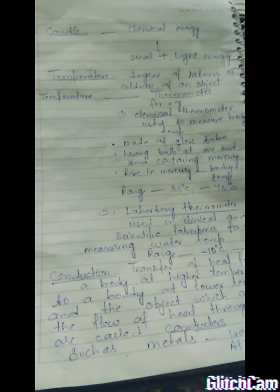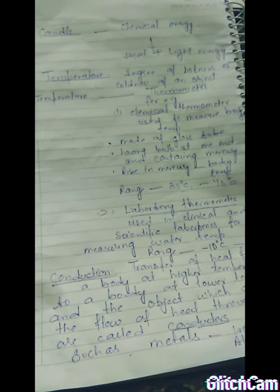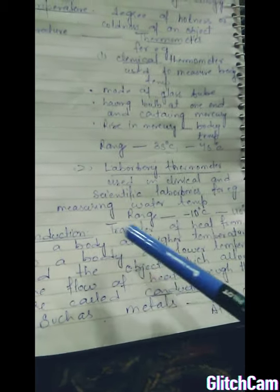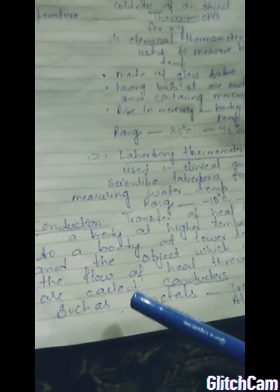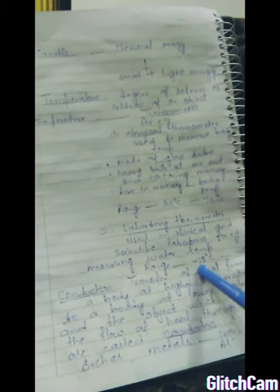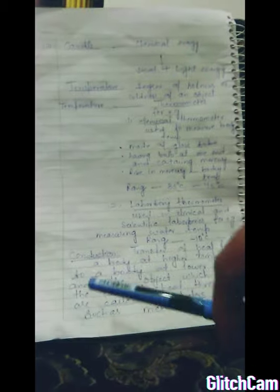Objects which allow the flow of heat through them are called conductors. Examples of conductors include metals such as iron, aluminum, and copper. These are all examples of conductors. Conduction mostly occurs in solids.